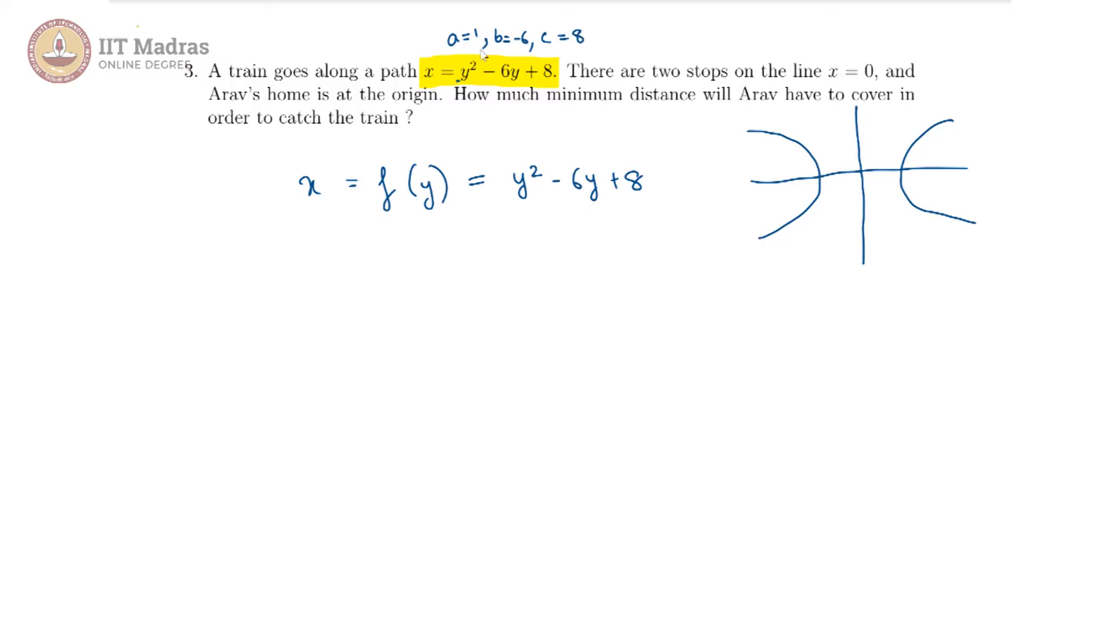Since a is greater than 0 we expect that this is an upturned parabola. In the case of upturn in x what we mean is it is towards the positive x-axis.